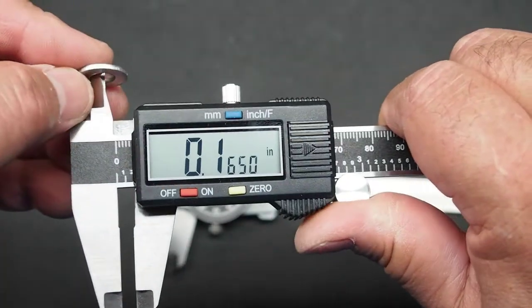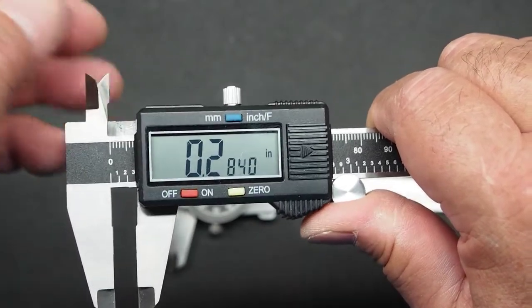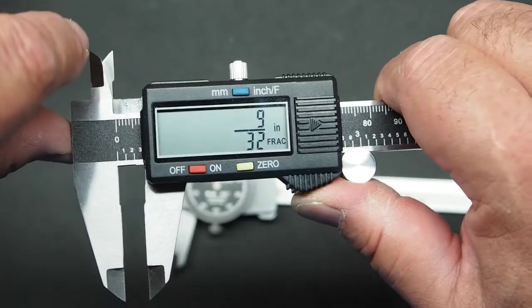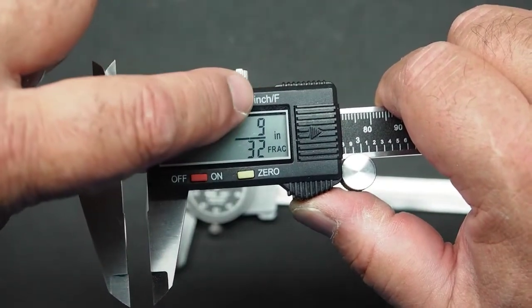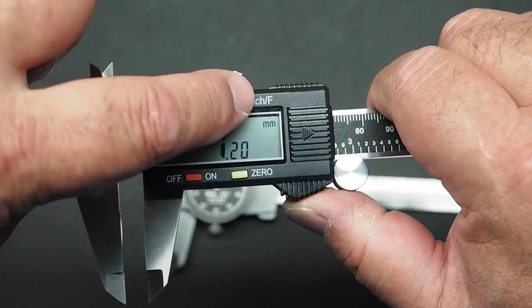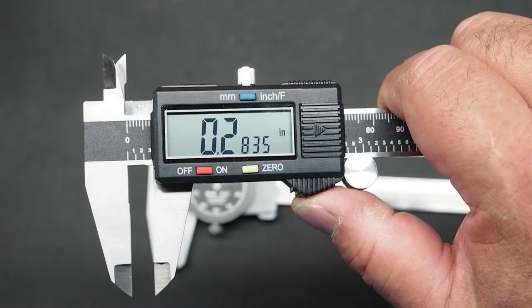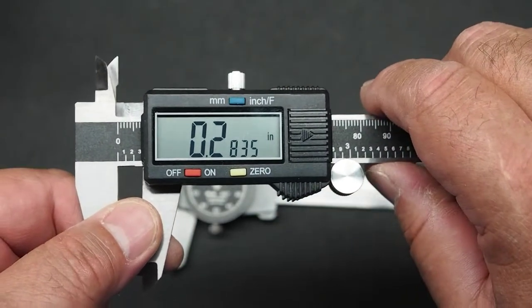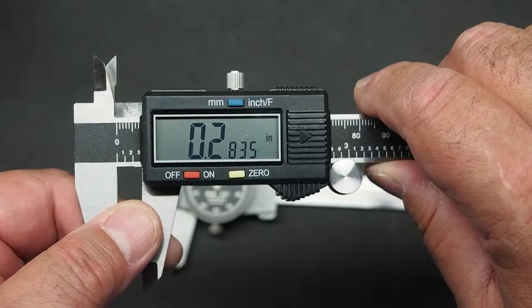And again you can do inside measurements as well. And the neat thing here is I can change these measurements to fractions. Like that's 9.32 of an inch. Or to metric. So this is 7.2 millimeters. And then back. So really nice that you can see the measurements in multiple formats.